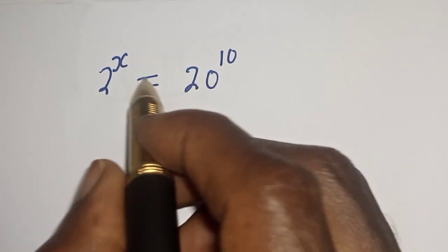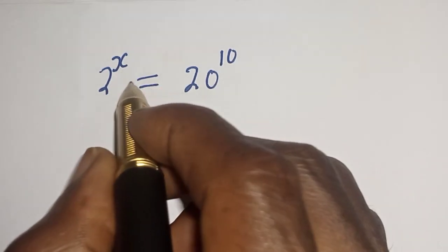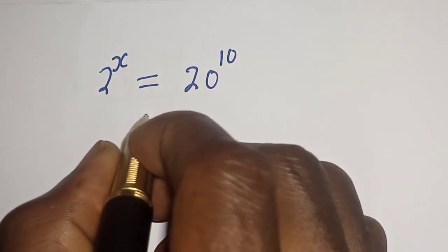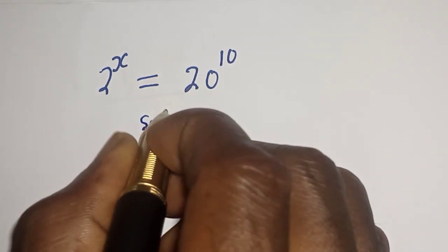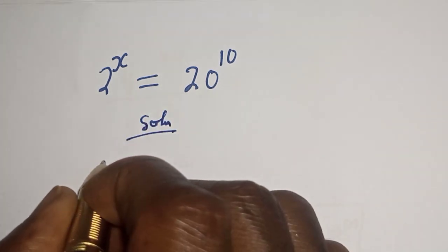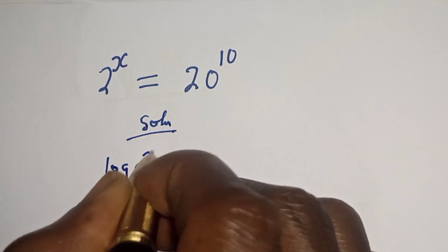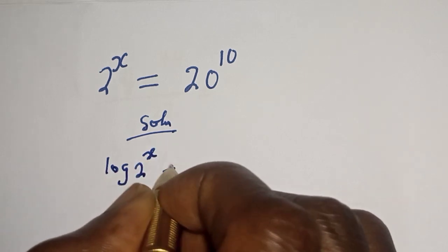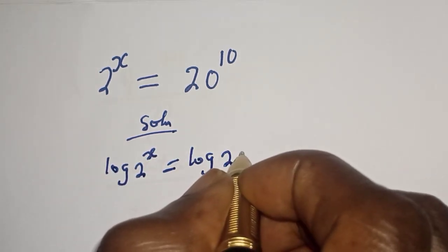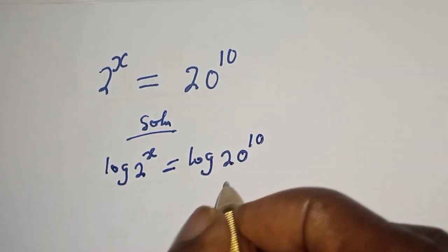Hello, welcome to Magis. In this class we want to find the value of S from this equation: 2 raised to power S is equal to 20 raised to power 10. Solution.